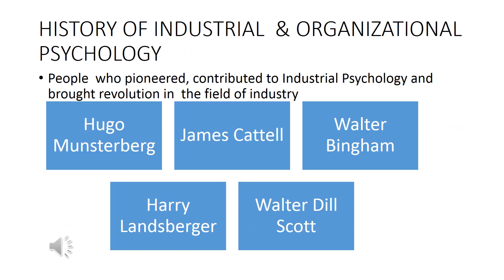Friends, let us understand the history of industrial and organizational psychology. Applying psychology to business first appeared in 1903. The first industrial and organizational psychology text appeared in 1910. People who are pioneers of industrial psychology and who brought the revolution in the field of industry are Hugo Munsterberg, James Cattell, Walter Bingham, Harry Lansberger, and Walter Dill Scott.